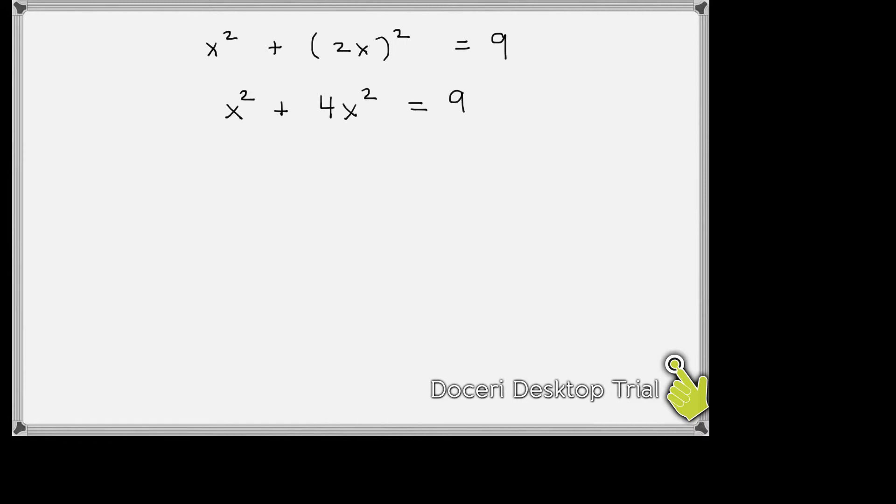Okay, so next I'm just going to keep simplifying. I square the quantity 2x, and I get 4x² = 9. And then over on the left side I've got some like terms that I can combine. I have 1x² plus 4x² is 5x². And so now the equation is as simple as I can get it on either side.